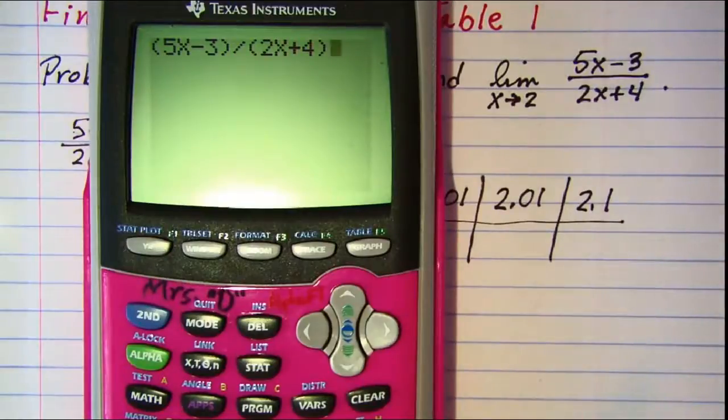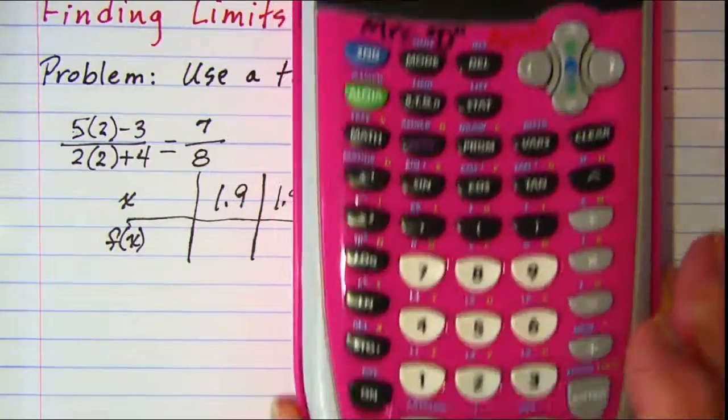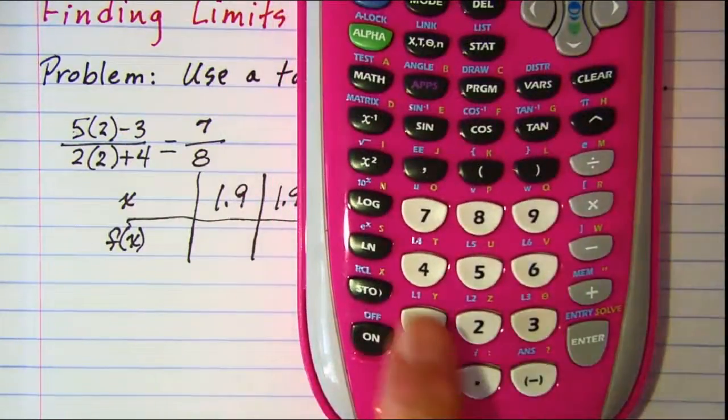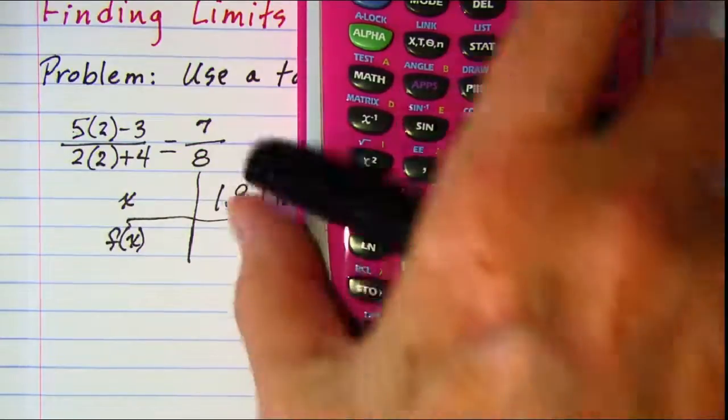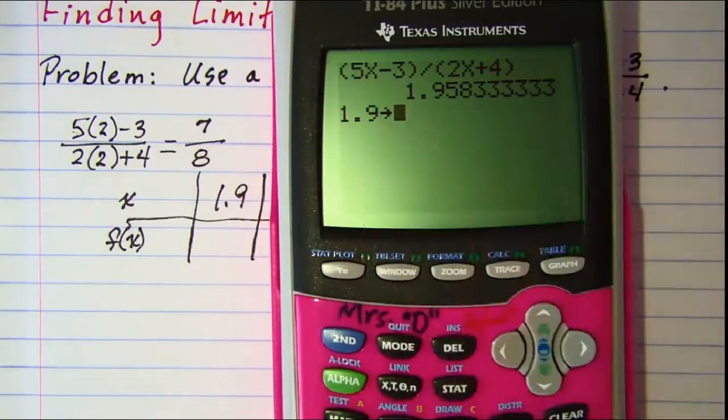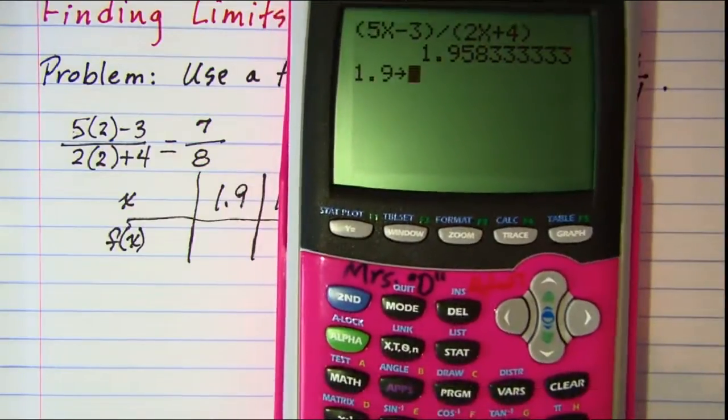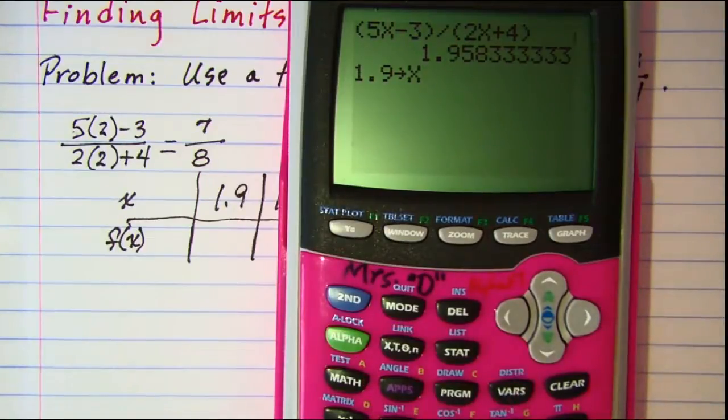Now when I press enter I'm going to ignore the value because there's probably a number stored in there for x. So I'm going to ignore that value and then I'm going to store in 1.9. So I'm going to hit 1.9 and then the store button is right here above the on. So hit store and you'll get a little arrow showing and then I'm storing that 1.9 into the x. And press enter.